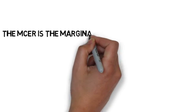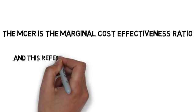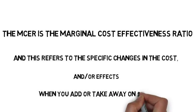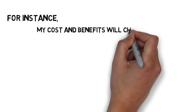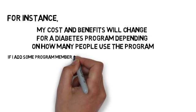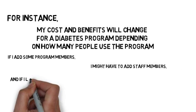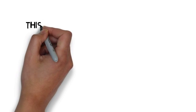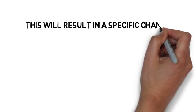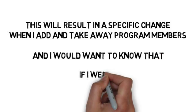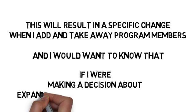The MERCER is the marginal cost-effectiveness ratio, and this refers to the specific changes in the cost and/or effects when you add or take away one unit. For instance, my cost and benefits will change for a diabetes program depending on how many people use the program. If I add some program members, I might have to add some staff members, and if I lower some program members, I might have to cut some staff members. This will result in a specific change when I add and take away program members, which is important to know when making decisions about expanding or shutting down a program.